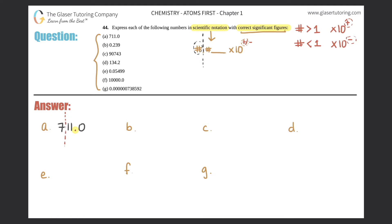I have to take this decimal and bunny hop it to right after the first number. How many spaces did I go? One, two — two bunny hops. That's what your exponent is. The number of bunny hops tells you the times 10 to the value, but it won't tell you whether it's a positive two or a negative two. So for right now I know I did two bunny hops, so it should be times 10 to the second. This number, 711, is obviously greater than one, so that means it's a plus two.